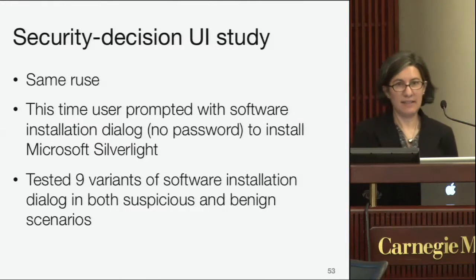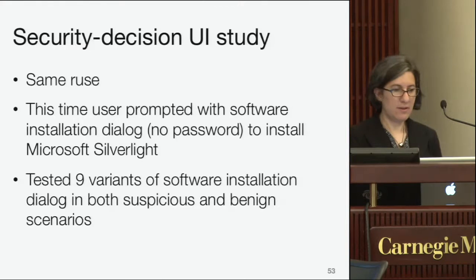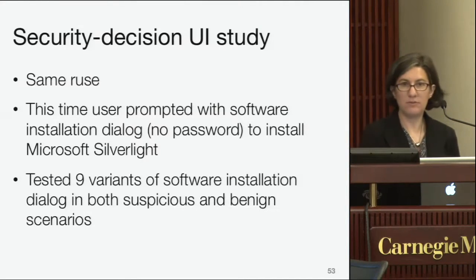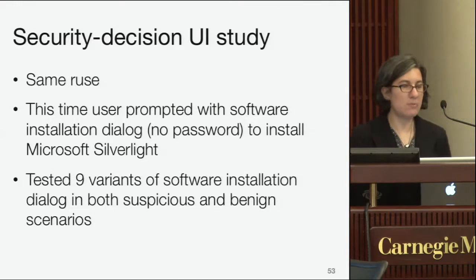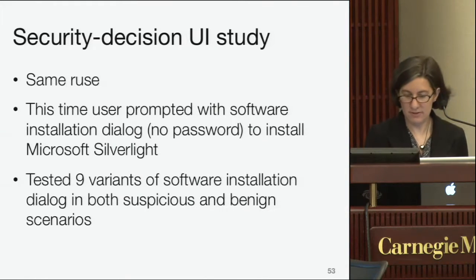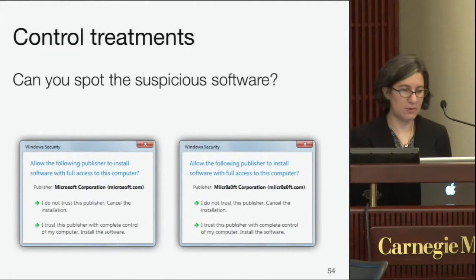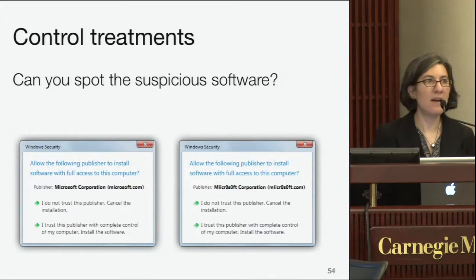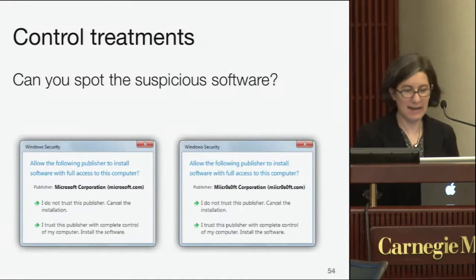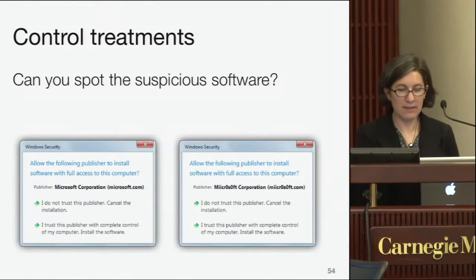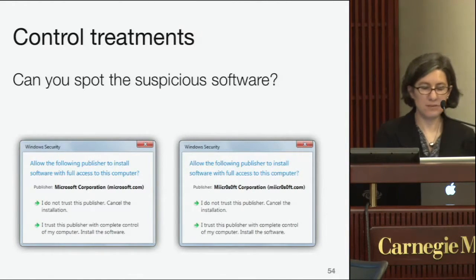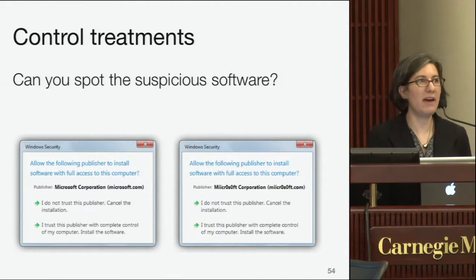The second study was about the security decision user interface. We used the same ruse, except this time we didn't ask people to enter a password — we just wanted to see whether they would install something we told them was Microsoft Silverlight but could have been malware. We tested nine different variants of a software installation dialogue. Our control condition showed the same dialogue in two circumstances — one suspicious and one benign. If you look carefully, the suspicious one has 'Microsoft' clearly misspelled. In piloting, many people didn't notice that.